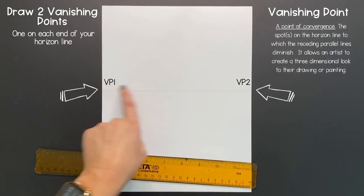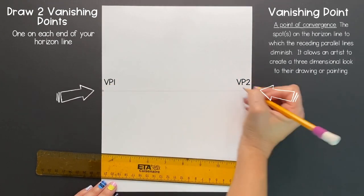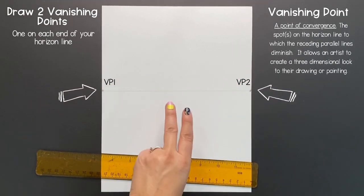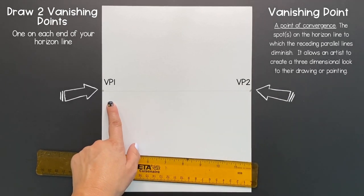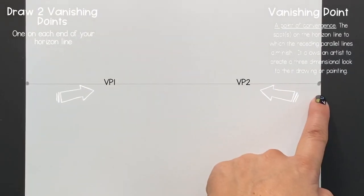Next draw two vanishing points, one on each end of your horizon line by creating two dots. Your vanishing points are a point of convergence. The spots on the horizon line which the receding parallel lines diminish. It allows an artist to create a three-dimensional look to their drawing or painting.